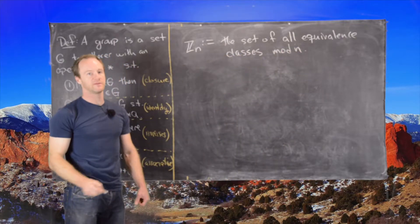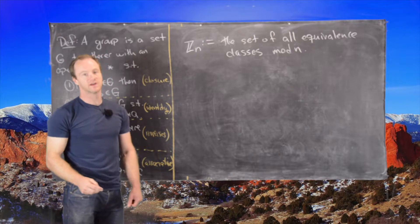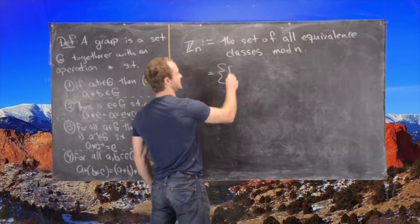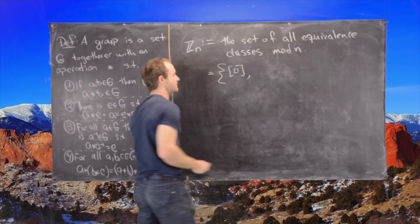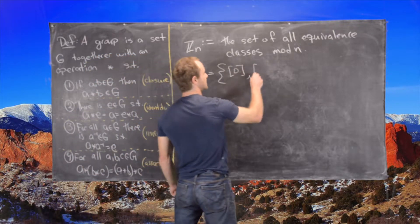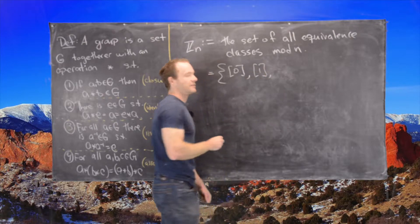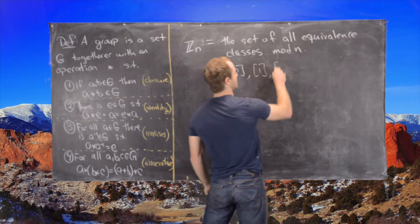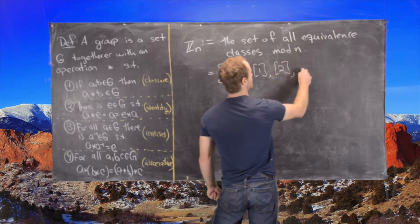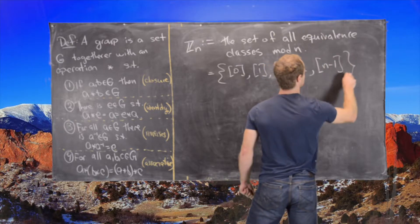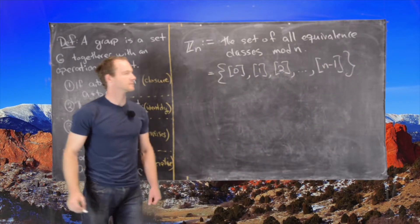So I have a previous video where we go over this, but it's not that hard to see that this is equal to the equivalence class of zero (so that would be all multiples of N), the equivalence class of one (so that would be all numbers that have remainder one when divided by N), the equivalence class of two, and so on up to the equivalence class of N minus one.